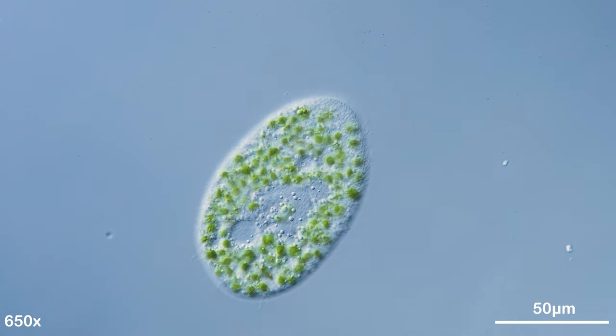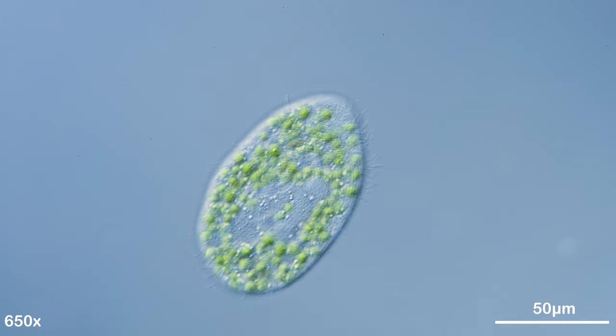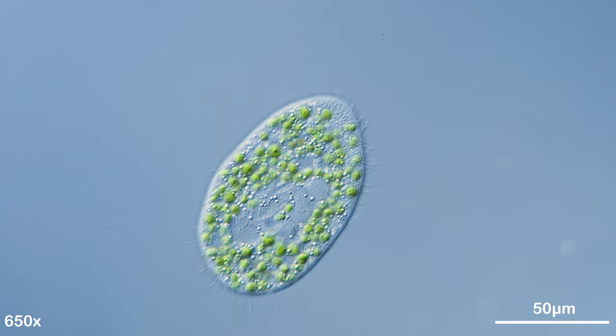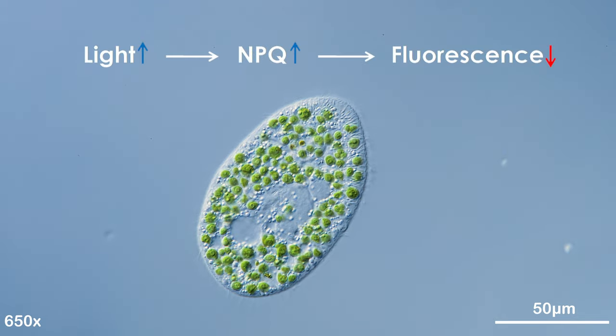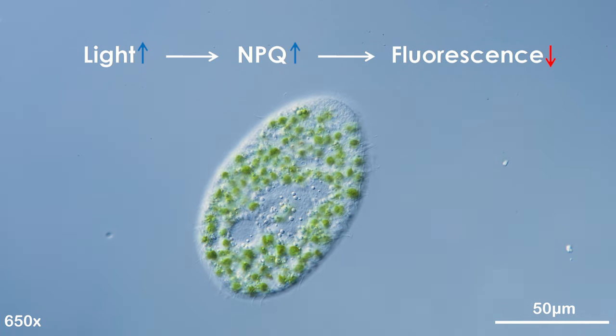Upon activation of this protective mechanism, less fluorescent light is emitted and more energy is dissipated as heat. That means when we hit paramecia with strong light, the intensity of the red fluorescence quickly declines.